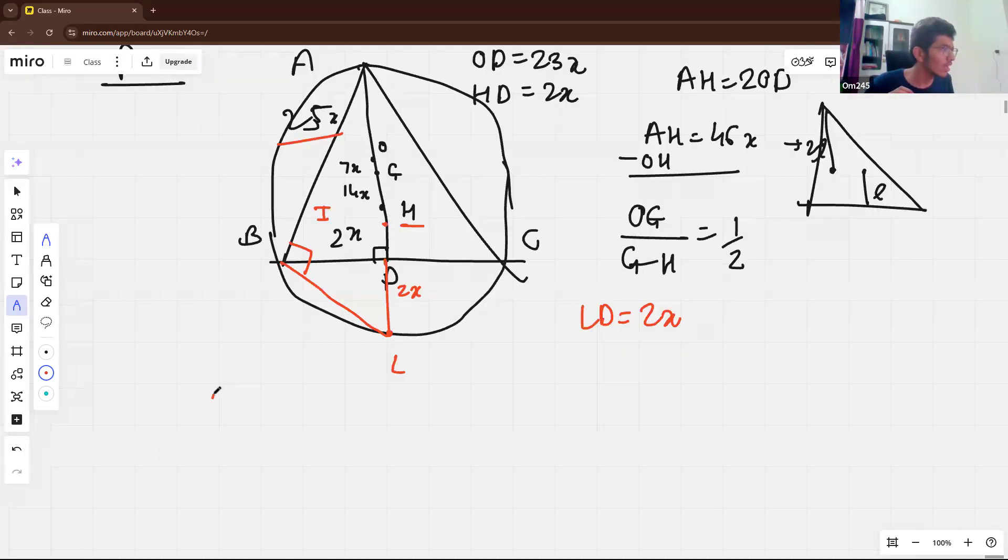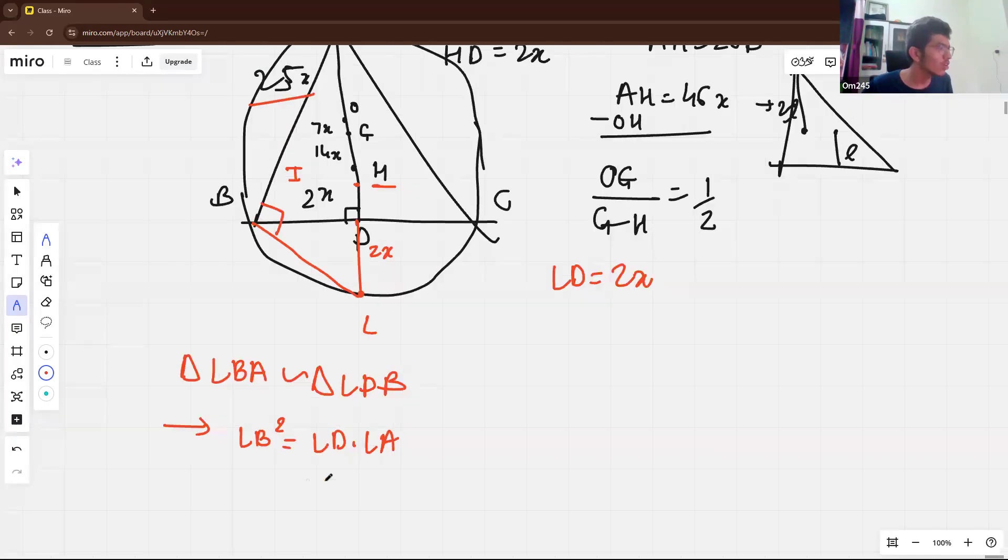And this actually give us angle L, triangle LBA similar to triangle LDB. And this ratio actually give us the key length condition that LB square equal to LD into LA. Now we know LD equal to 2X and LA you can calculate, it's like 50X, which totally give us LB equal to 10X.